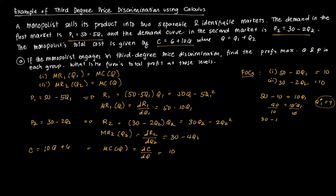For the second FOC: 30 minus 10 equals 4Q2, so 20 equals 4Q2. Dividing both sides by 4 gives Q2 star equal to 5.